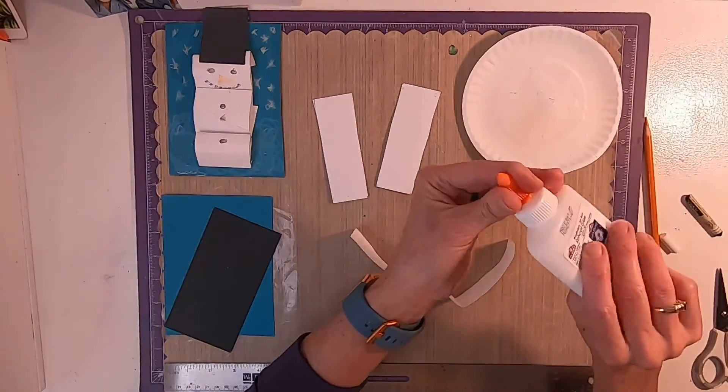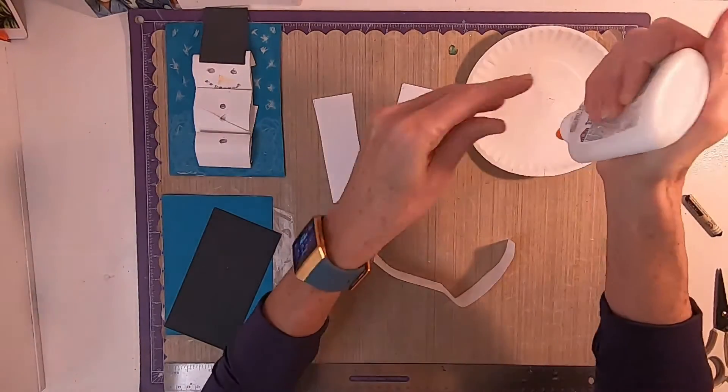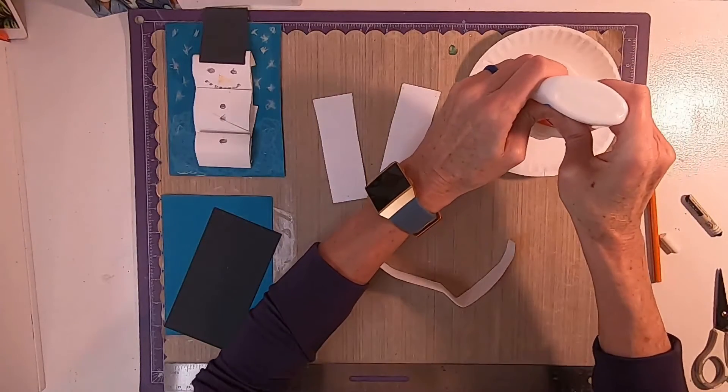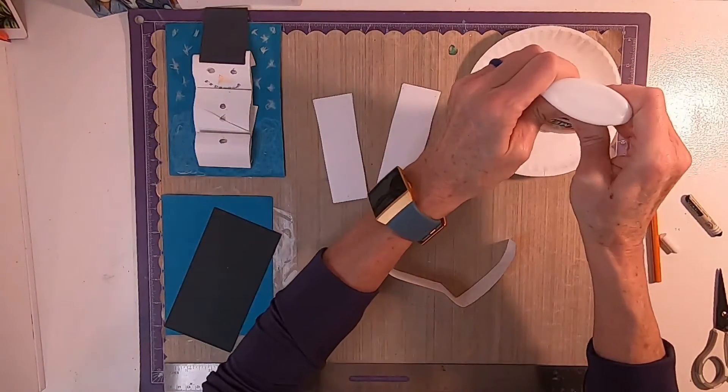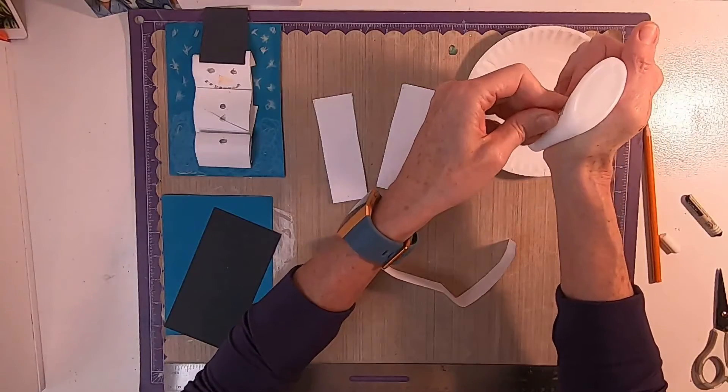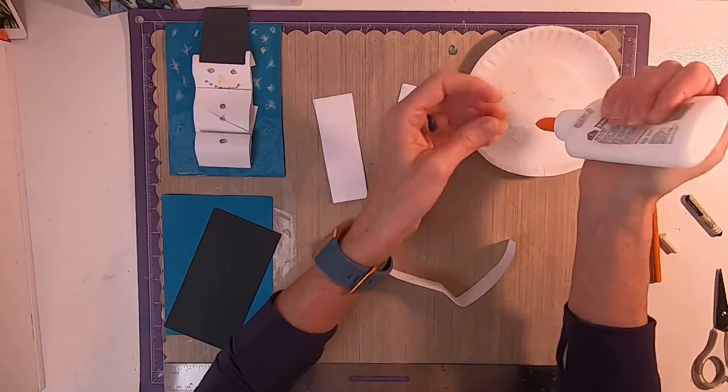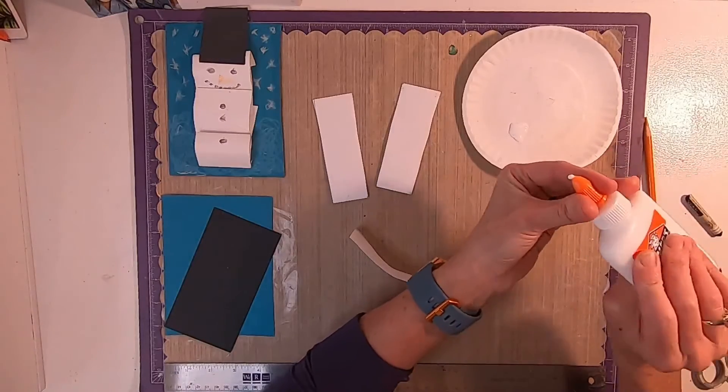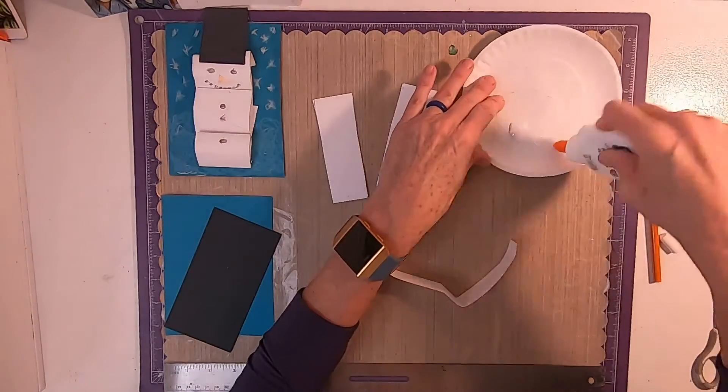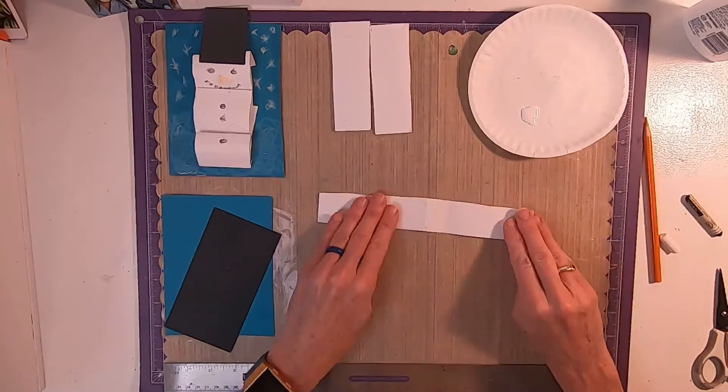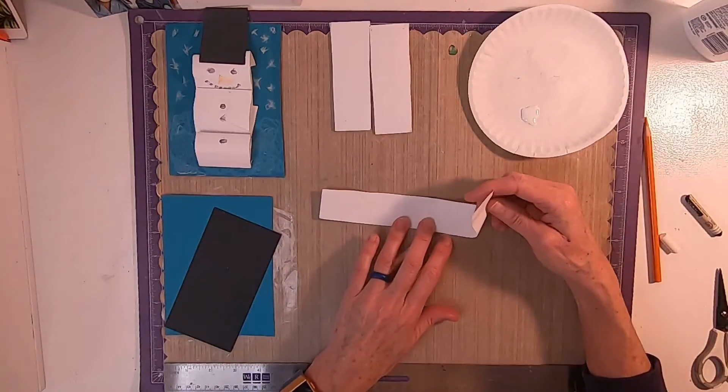So, squirt some glue on your paper plate. We won't need a whole bunch. So, that ought to do it. Let's stop right there. Close your glue back up.